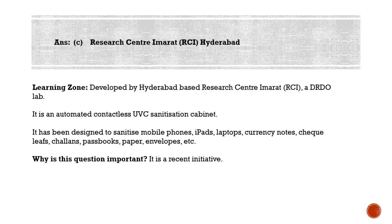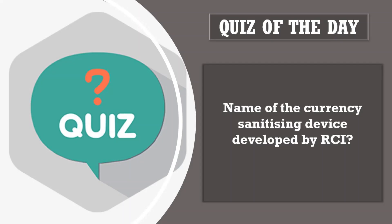Research Centre Imarat (RCI) has also developed an automated UVC currency sanitizing device. So our quiz question is: What is the name of this currency sanitizing device developed by RCI? Please post your answers in the comment section. That's all for today — please also post your scores in the comment section. We'll meet tomorrow with another set of questions. Thank you for watching.